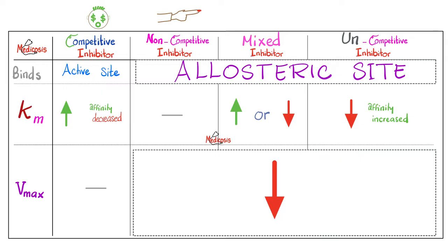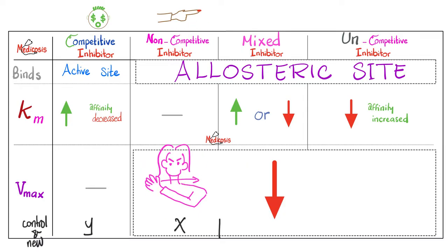Let's review the line intersections. With competitive inhibitors, the old and new lines intersect at the Y axis. With non-competitive inhibitors, both lines intersect at the X axis — I remember this because Karen threatens me with a horizontal across-the-neck motion, and the horizontal axis is the X axis. With mixed inhibitors, both lines intersect at a point that's neither on the X axis nor the Y axis. With uncompetitive inhibitors, both lines are parallel to one another.